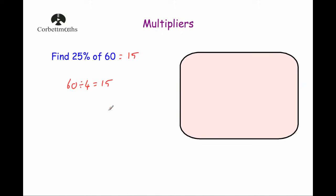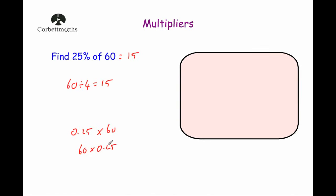Another way to do it is to use a multiplier. Particularly whenever the percentages aren't as nice as 25%, multipliers can be really useful, especially if you've got a calculator handy. To use a multiplier, we're going to change the percentage into a decimal. So 25% is the same as 0.25. And if you times 60 by 0.25, that will tell you 25% of 60.